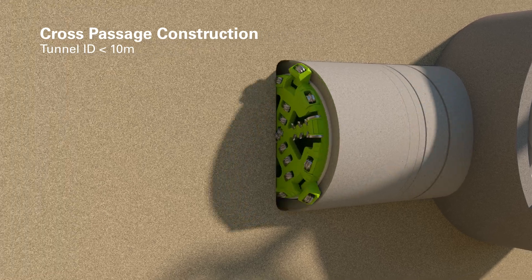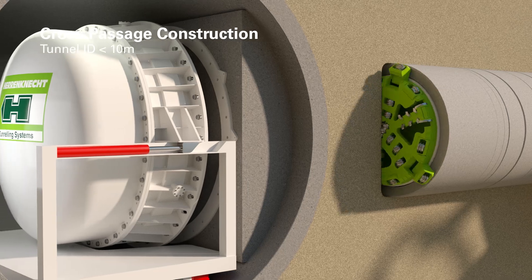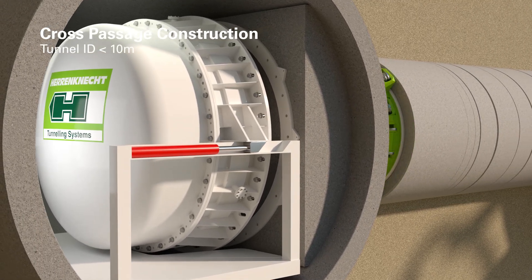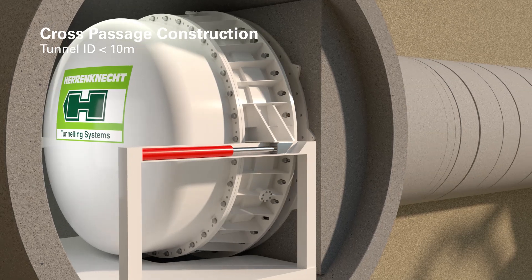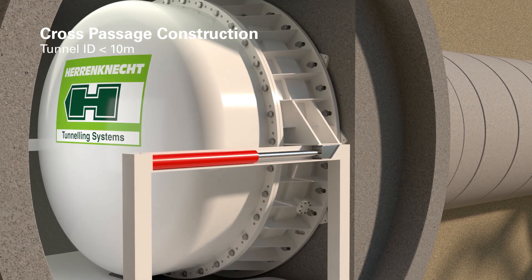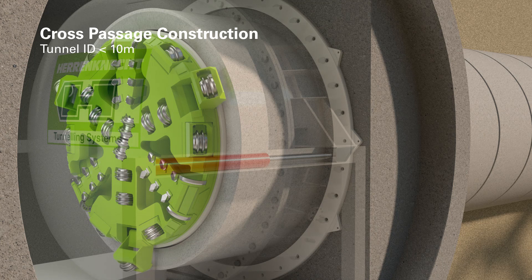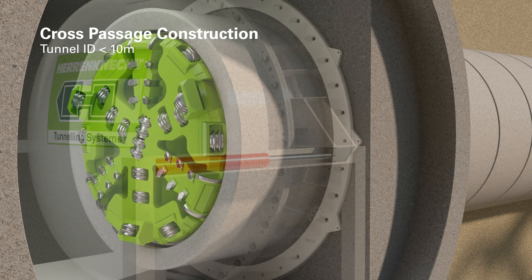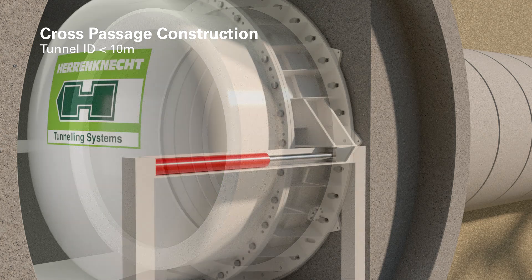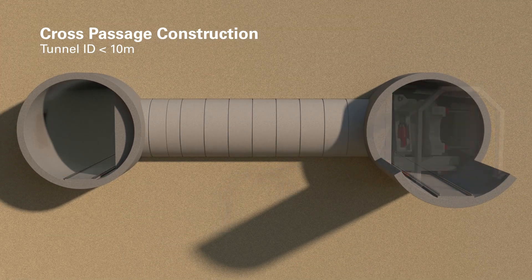Excavation process and lining with reinforced jacking pipes takes place simultaneously. Due to logistical reasons, the tunneling machine cannot be recovered in the target tunnel. Therefore, it is designed for retraction to the launch tunnel. After reaching its final position in the reception bell in the target tunnel, the over-cutters of the tunneling machine are folded back and the machine is retracted to its initial position. This procedure ensures a quick relocation of the whole equipment to the next cross-passage construction site.